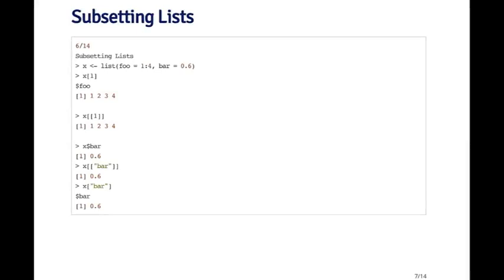Subsetting a list is a little bit different because you can use the double bracket or the dollar sign operator. You can also use the single bracket operator. Here I've got a list — the first element is a named element called foo, it's a sequence one through four. The second element is named bar and it's the number 0.6. So this is a list with two elements in it.